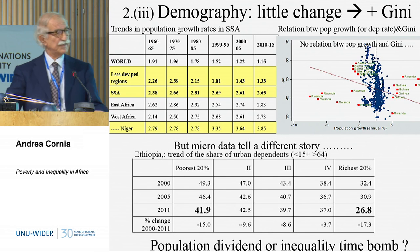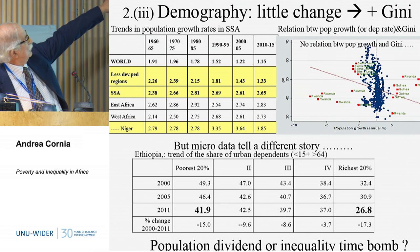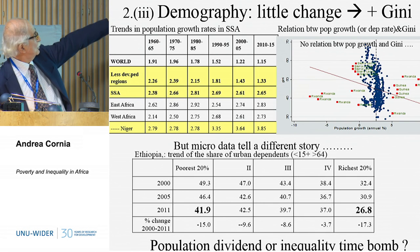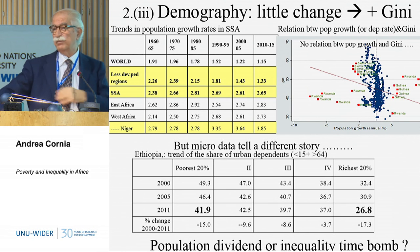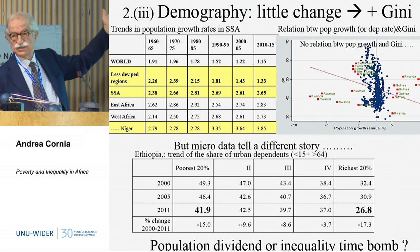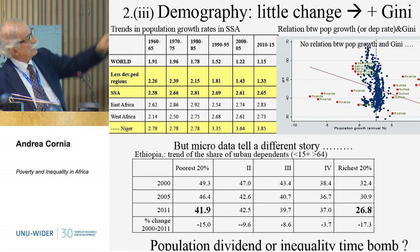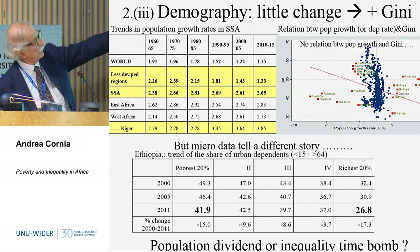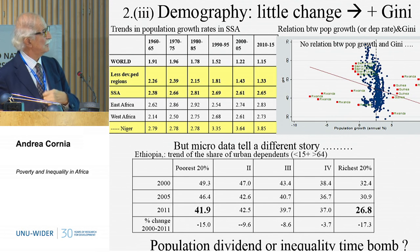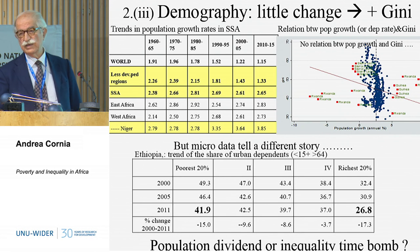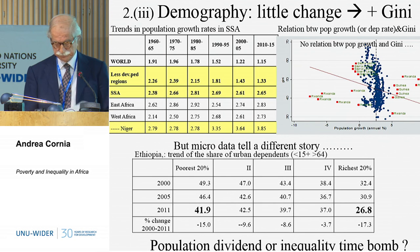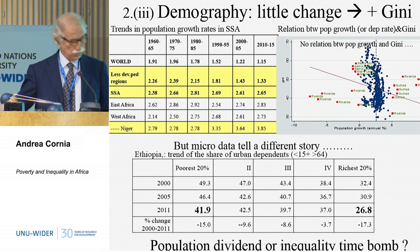Nobody has mentioned what happens to demography. In less developed regions, population growth rates are going from 226 to 133; for Sub-Saharan Africa, 238 to 265. Niger — a country I've visited two or three times — goes from 279 to 385; population doubles in 13 years. On macro data there is no effect because population growth rates are roughly all the same while Gini coefficients differ. But on micro data it's quite different: the richest households have lower dependency rates than poorer households, creating a huge pressure on poor families due to continued fast population growth.